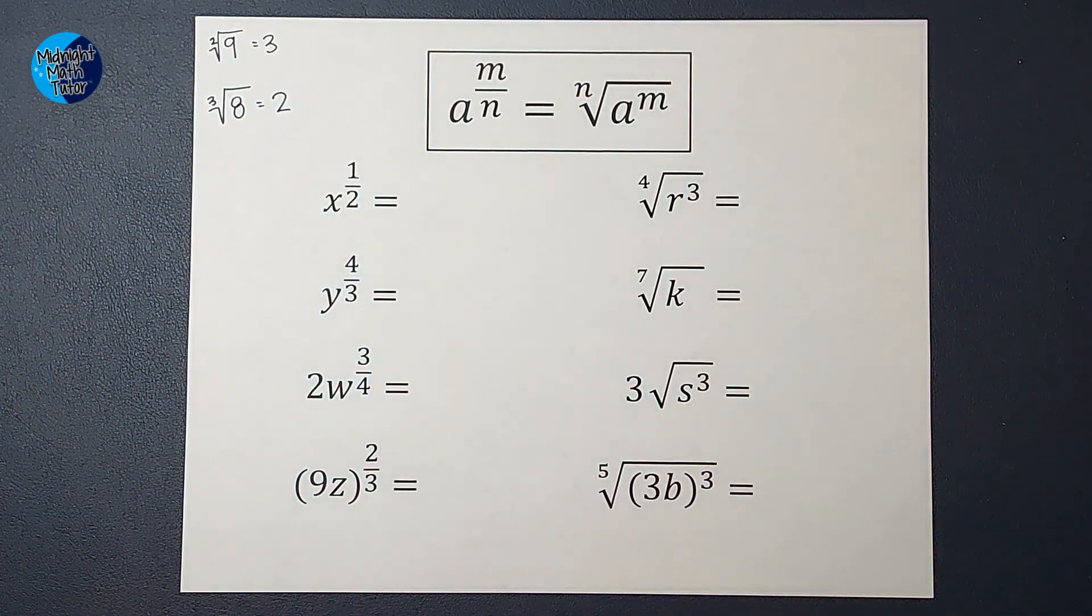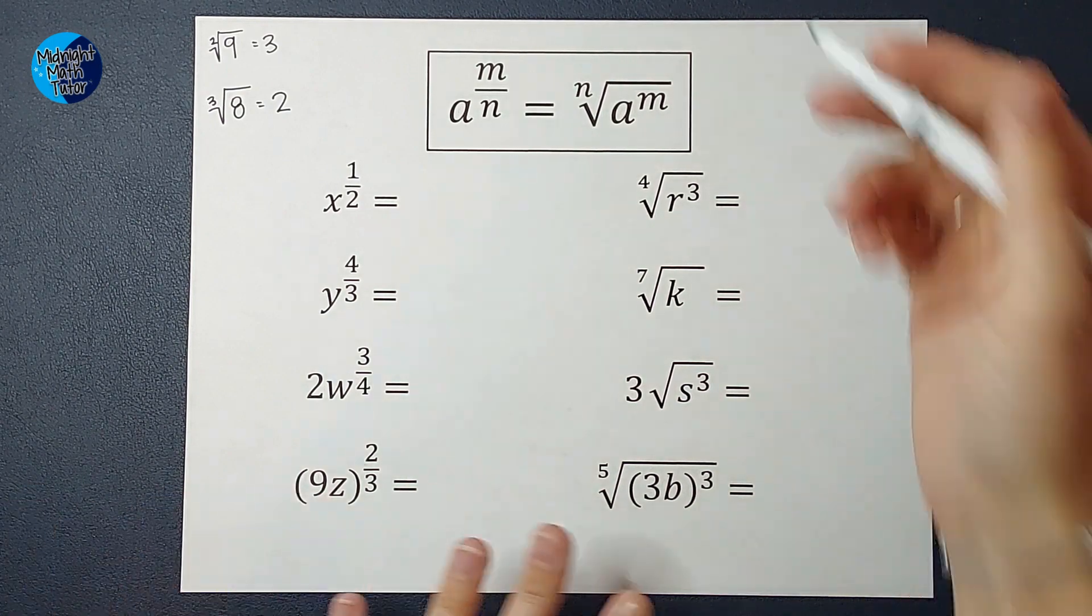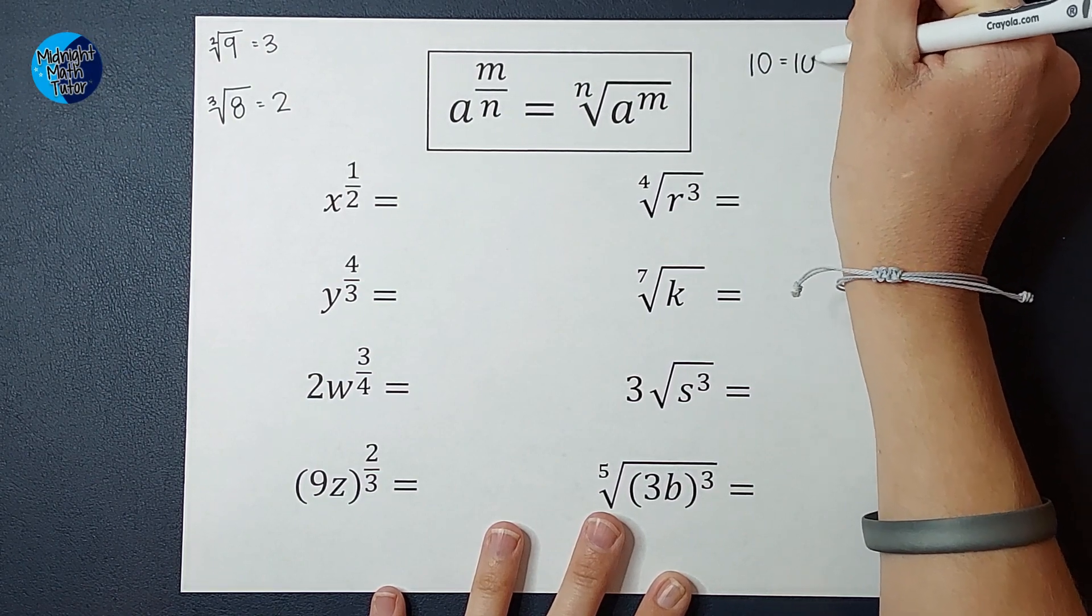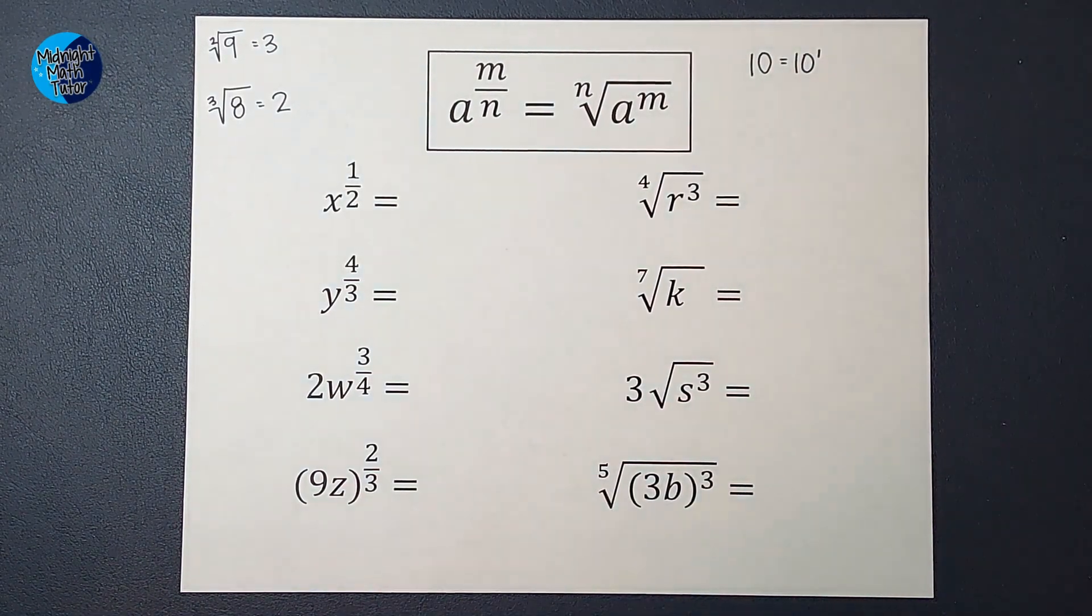Another thing is when a number doesn't have an exponent, it really has an exponent of 1. So 10 would be the same as 10 to the first power. So there's just some quick reminders before we start doing these problems.